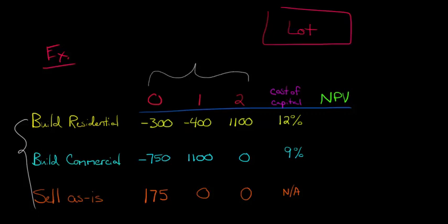We can look at our cost of capital. And our cost of capital might differ based on the project. So we might have cost of capital 12% for building residential, but if we build commercial, we decide it's 9%.